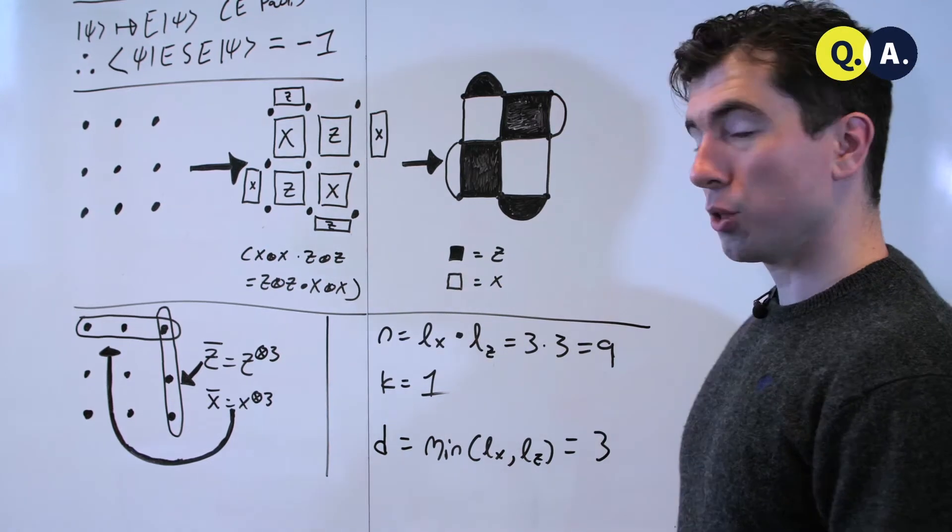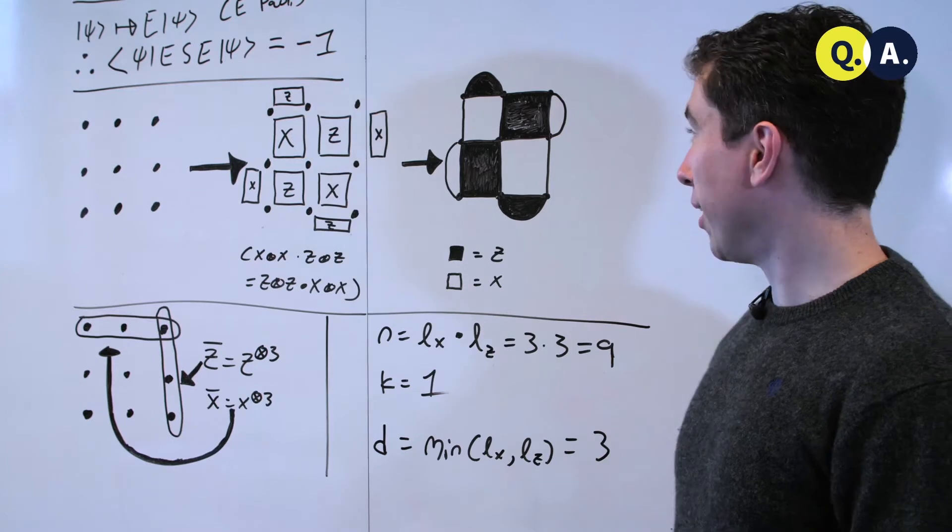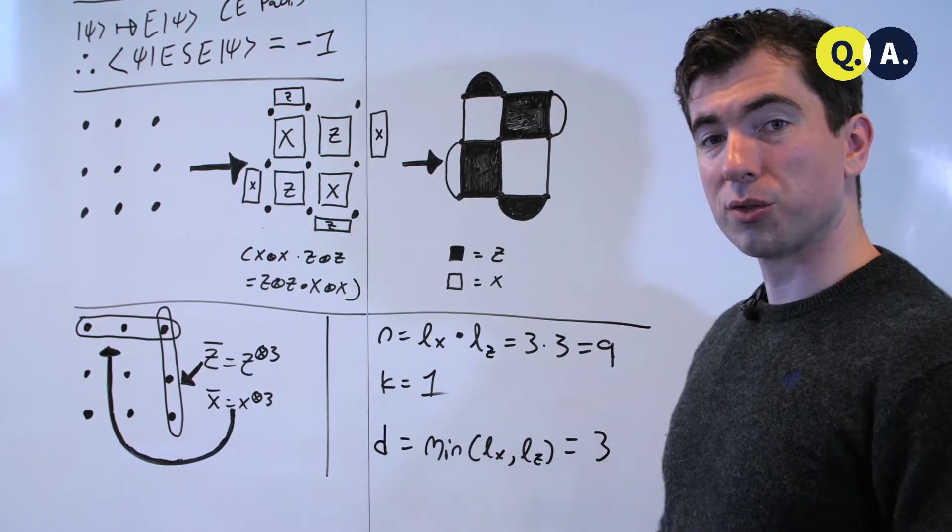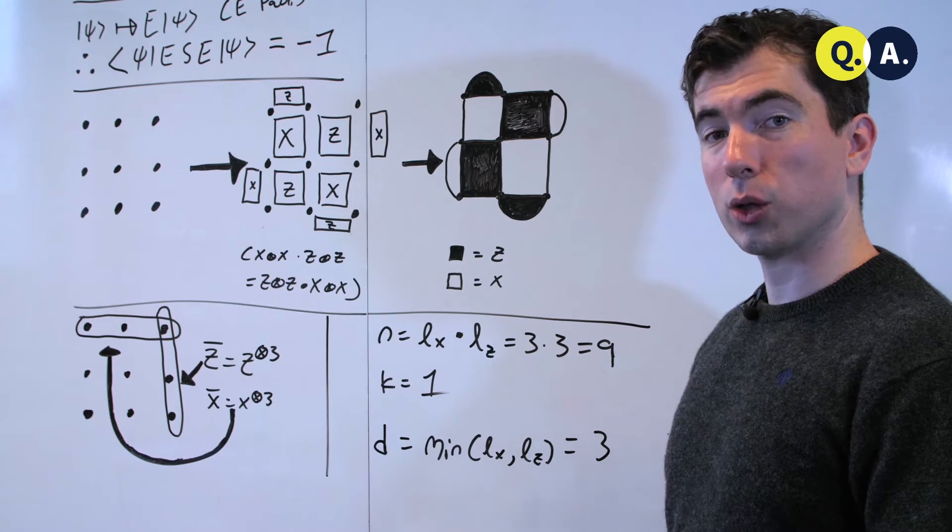So as you can see, square tiles are nice when error rates are equal, and you want to have equal distance for both x and z logical operators. Have a safe one. Good luck!